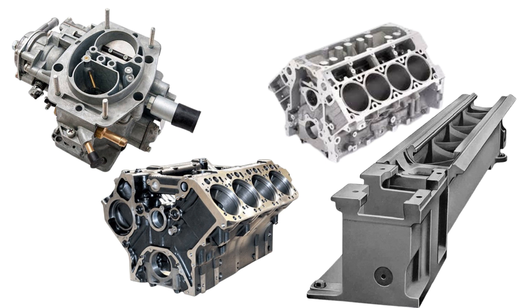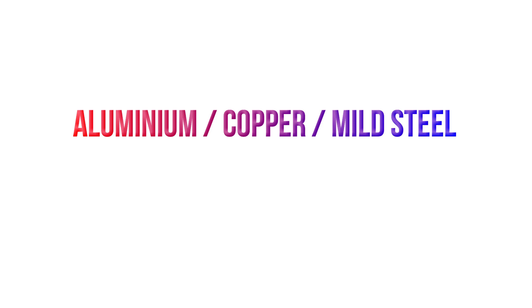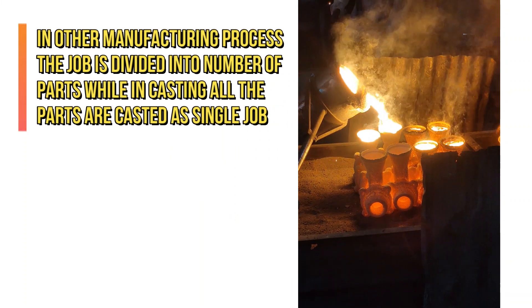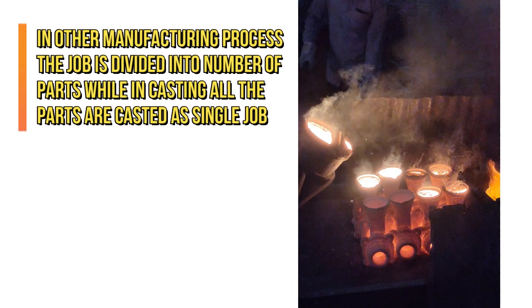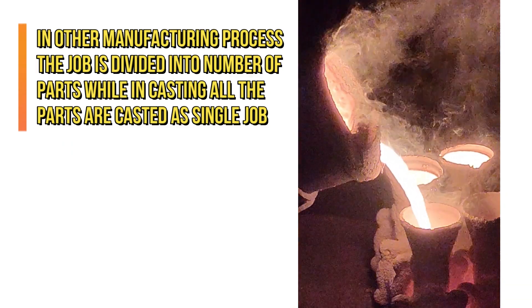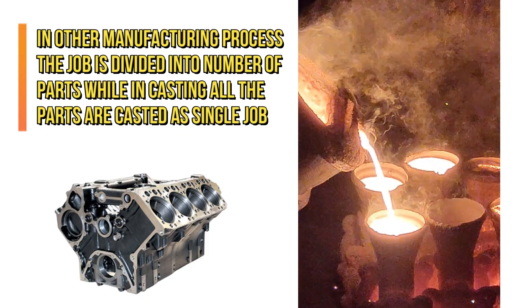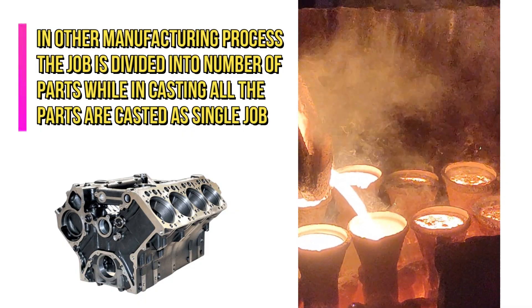Casting is possible with almost all metals, such as aluminum alloy, copper alloy, and mild steel. In other types of manufacturing processes the job is divided into a number of parts, whereas in casting all the parts are cast as a single piece.